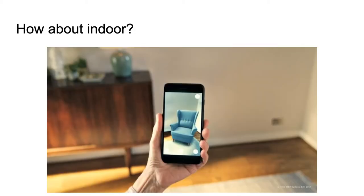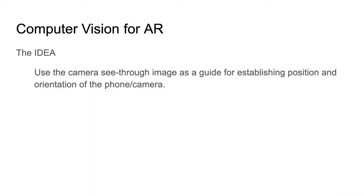For indoor AR, we need to use the information we actually have, which is the camera see-through image. Based on what the mobile phone observes in the scene, we can work out where the corner is and where the armchair should be placed. We use the camera information as a guide for establishing the position and orientation of the phone so that augmentation can happen.